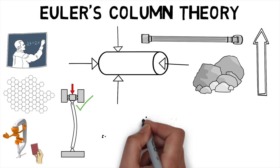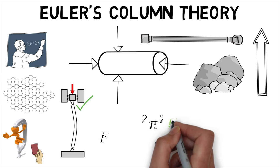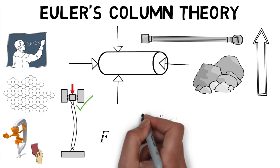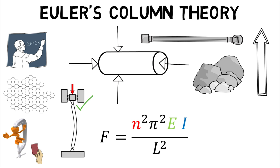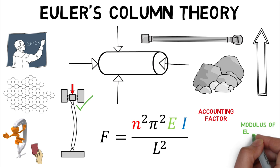Given these assumptions, Euler's column formula for calculating allowable load F is given by n pi squared EI upon L squared, where n, E and I are the factor accounting for end conditions, modulus of elasticity and moment of inertia respectively.